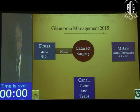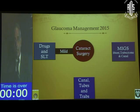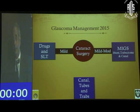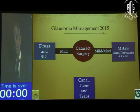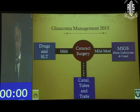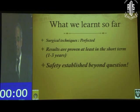In terms of glaucoma management in 2015: drugs and SLT for mild glaucoma; for mild-to-moderate glaucoma — especially with cataract comorbidity — the Trabectome or iStent are great options to reduce medications and better control pressure. Early pressure control may prevent disease progression. For severe cases, canaloplasty, trabeculectomy, and tube shunts remain available.